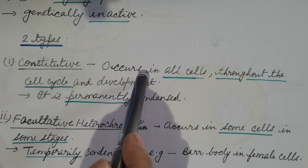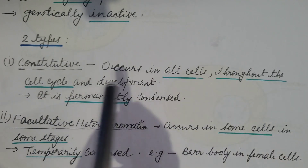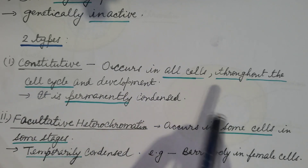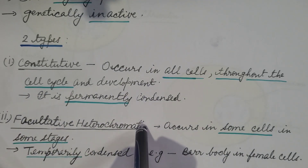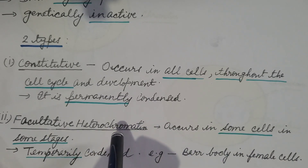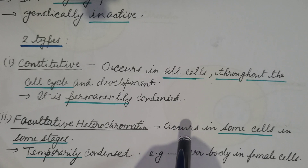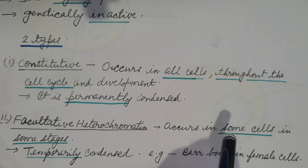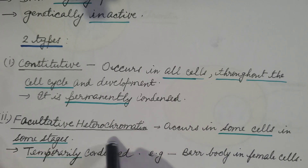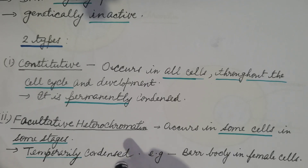Heterochromatin is of two types. First, constitutive heterochromatin, which occurs in all cells throughout the cell cycle and development — it is permanently condensed. Second, facultative heterochromatin, which occurs in some cells at some stages. At some points of development, genes are expressed while at others they are not, because this type is temporarily condensed — either condensed or decondensed depending upon cell type and developmental stage.